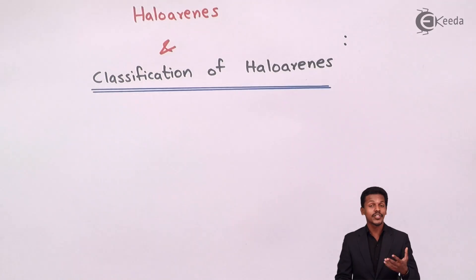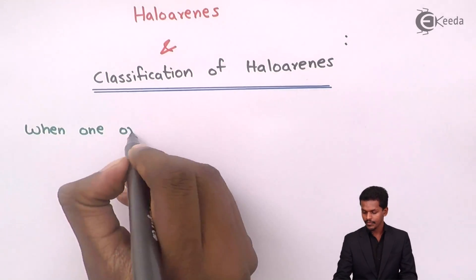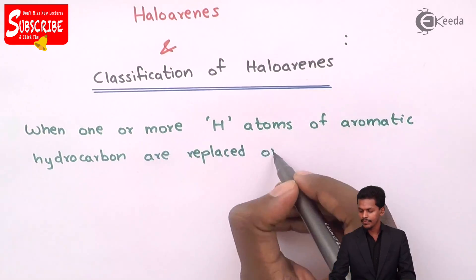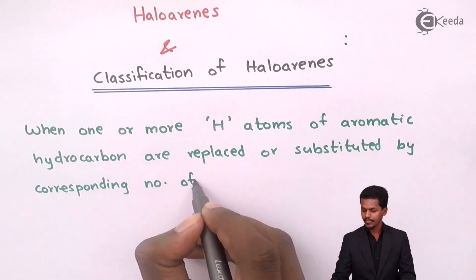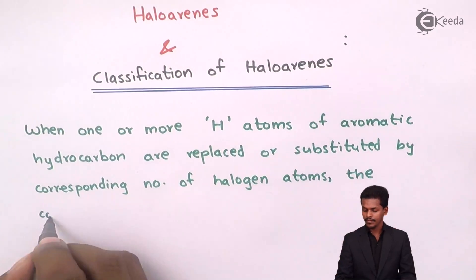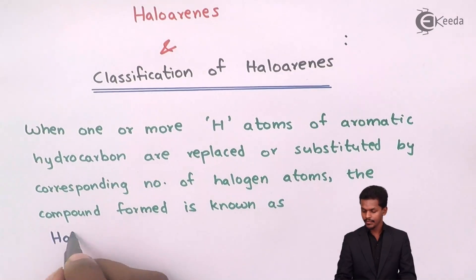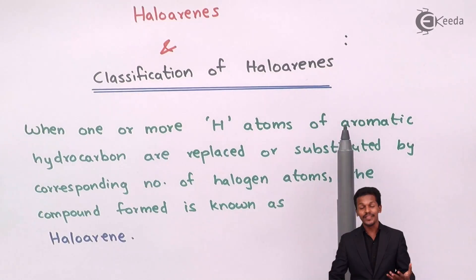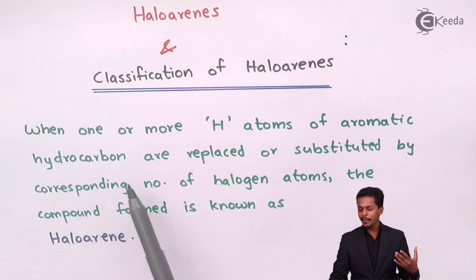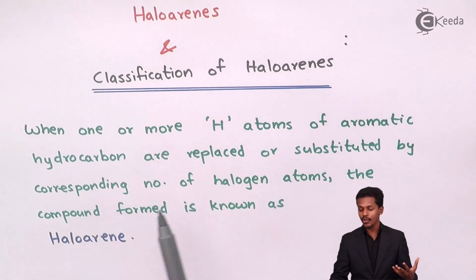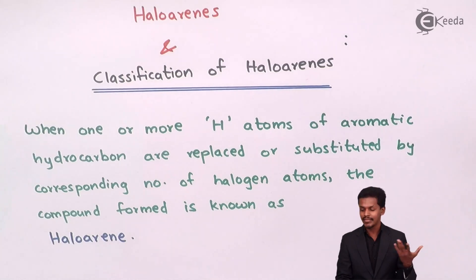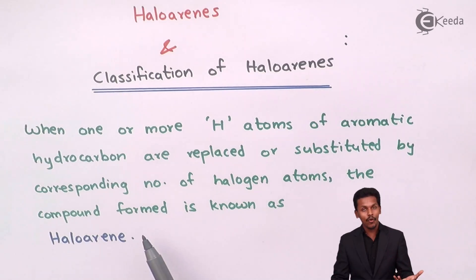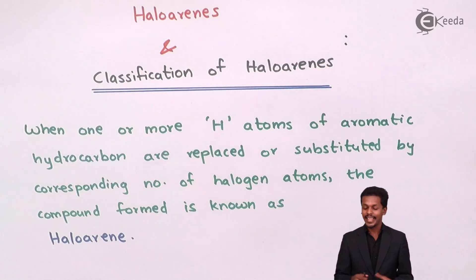So now talking about the definition: when one or more hydrogen atoms of the aromatic hydrocarbon like benzene are replaced or substituted by the corresponding number of halogen atoms — and those halogen atoms would be chlorine, bromine, iodine, etc. — the compound formed is basically known as haloarene.